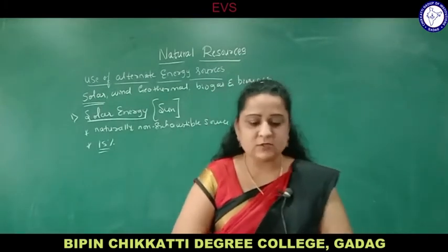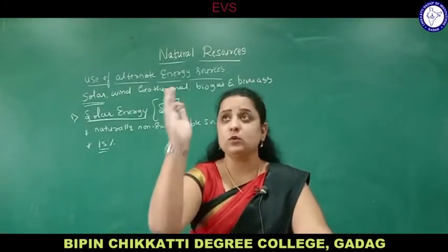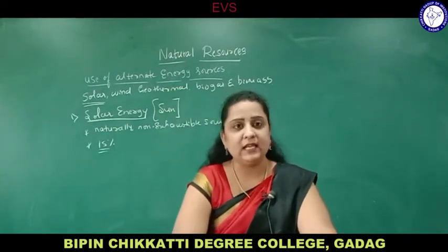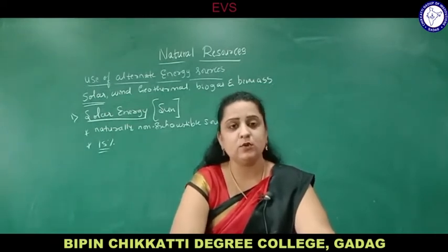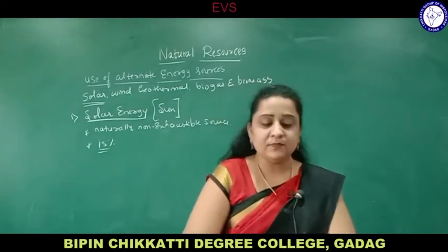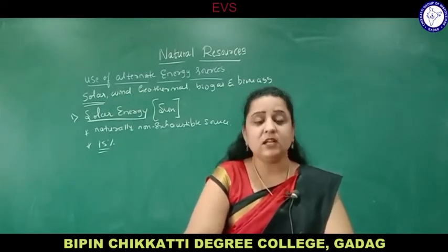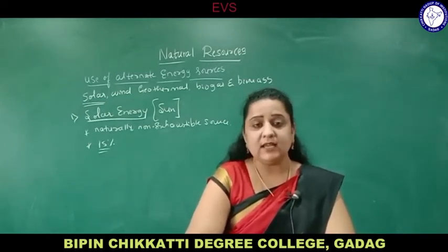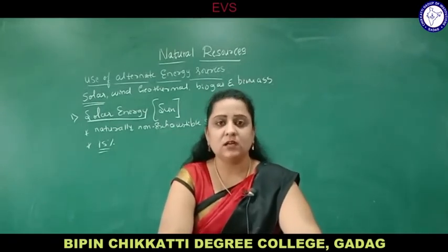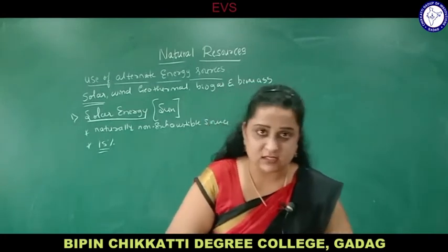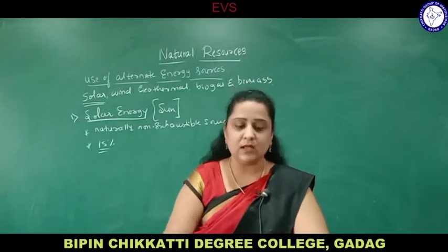Solar energy is used for cooking, water heating, and agriculture. Solar panels have been fixed for heating and water heaters, and electricity can also be produced from solar panels. There are three methods: solar thermal energy, solar photovoltaic (solar voltaic), and solar energy systems. These are the three types or methods of using solar energy.